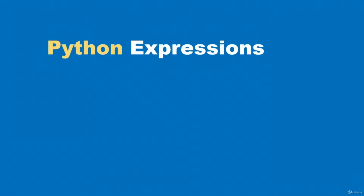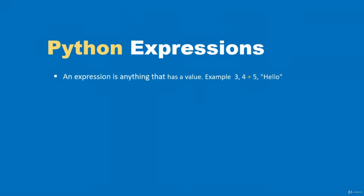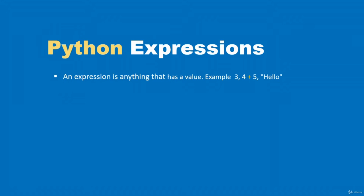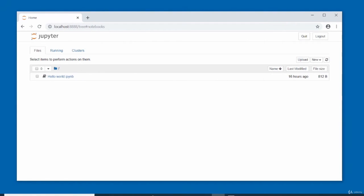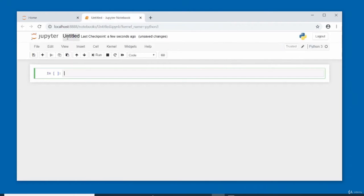In this video, we are going to take a look at Python expressions. An expression is anything that has a value — for example, the number 3, 4 + 5, and the string 'hello'. Texts are referred to as strings in Python. An expression can contain operators like the plus operator and operands — in the example 4 + 5, four is the operand, five is also an operand, while the plus is known as the operator. I'm going to create a new notebook called Python expressions.